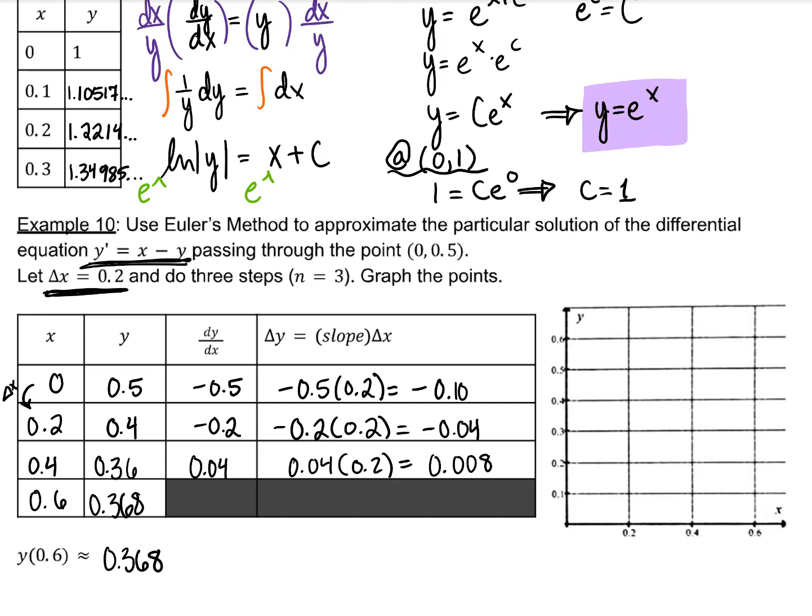Euler's method makes a more precise graph, so let's go ahead and graph these x, y values. Here is an approximation of our particular solution graph using Euler's method where delta x is 0.2, starting at (0, 0.5).